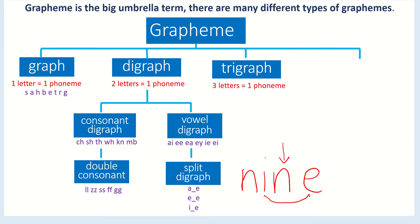Next we have a trigraph. Trigraph is where three letters equal one phoneme. And here's some examples. That igh, the first one, makes the phoneme i. That would be the first trigraph they would learn.